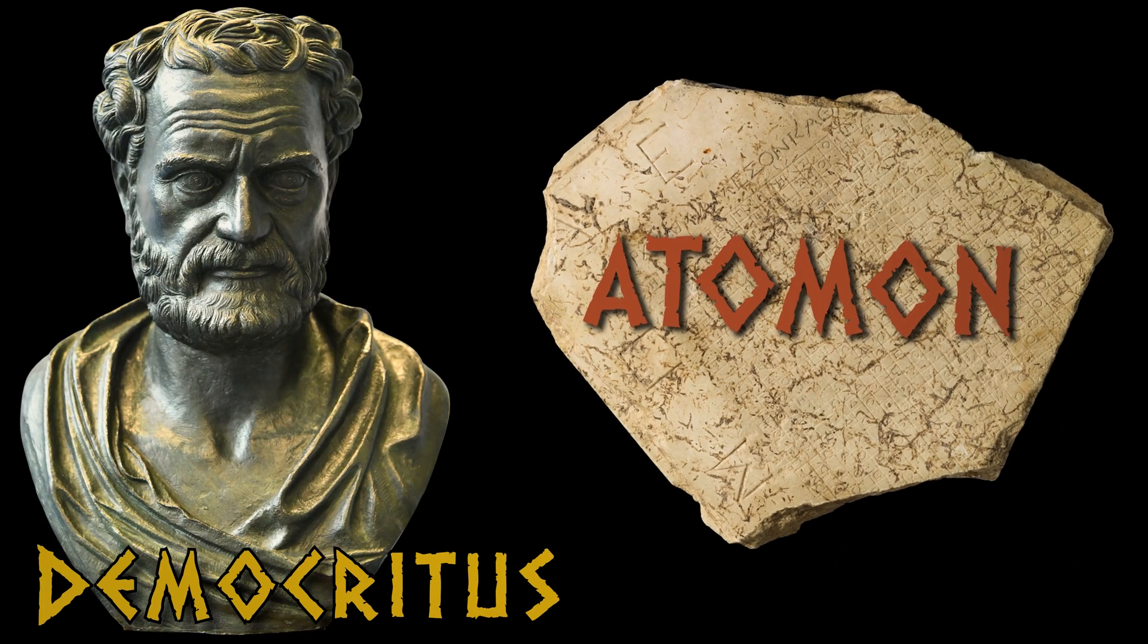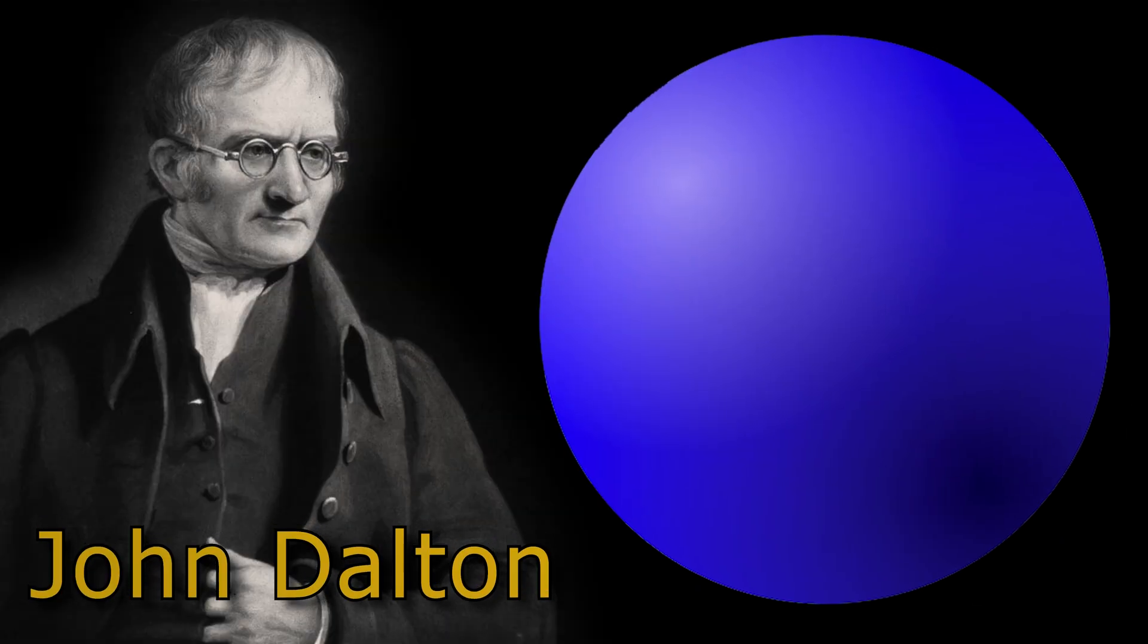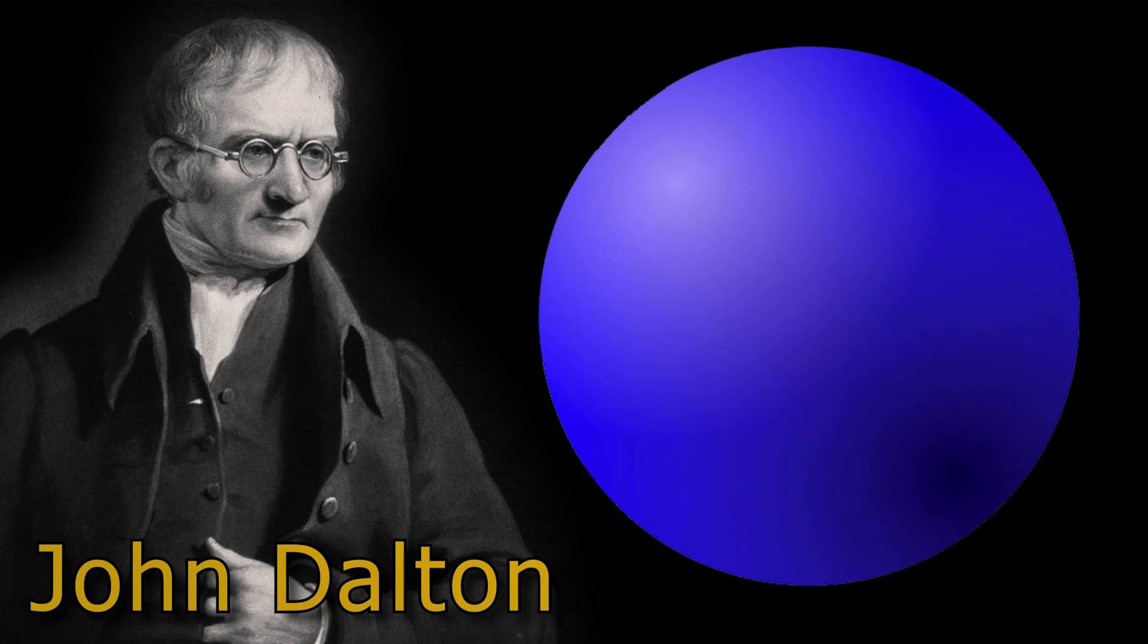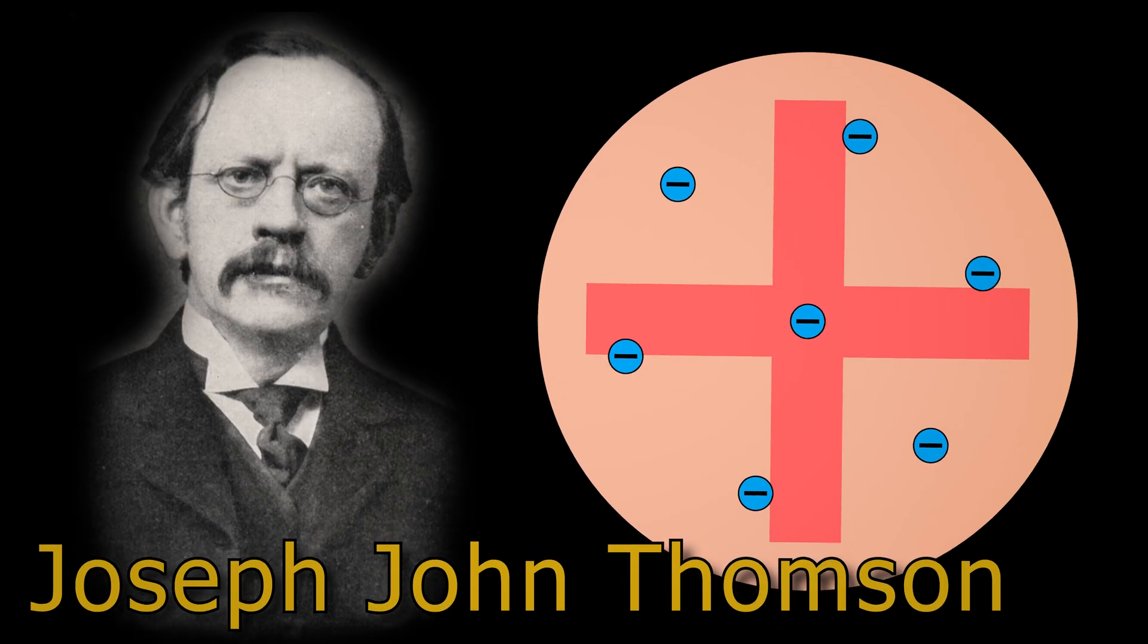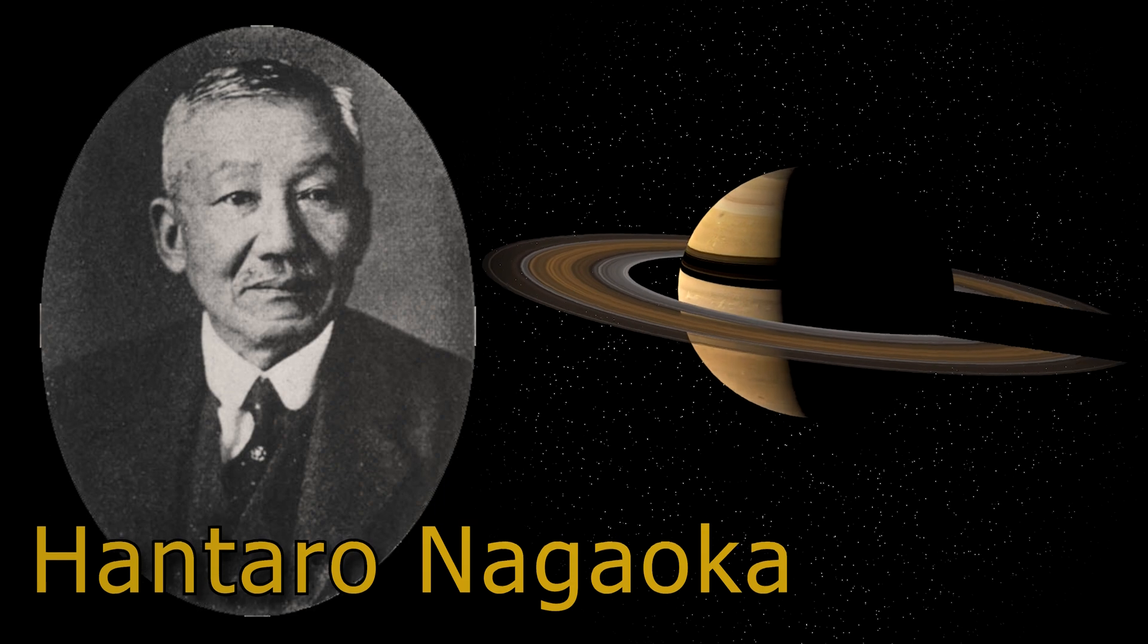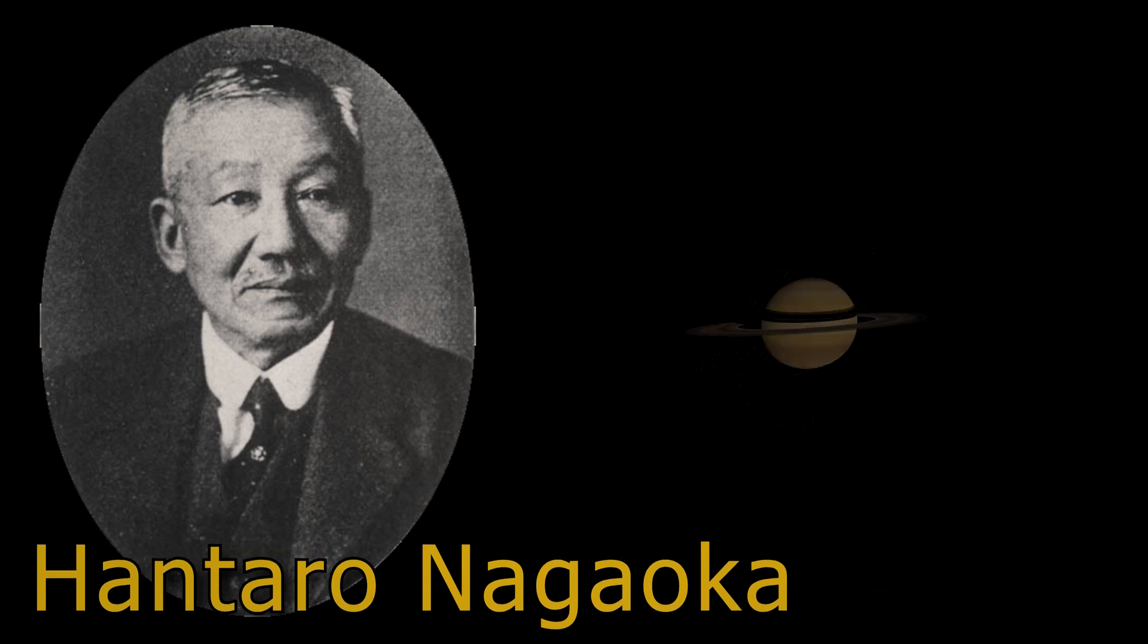Democritus sparked the idea of atoms. John Dalton gave it scientific form. Thomson introduced electrons to the atom. Nagaoka's rings twirled, then dispersed. So what happened next?